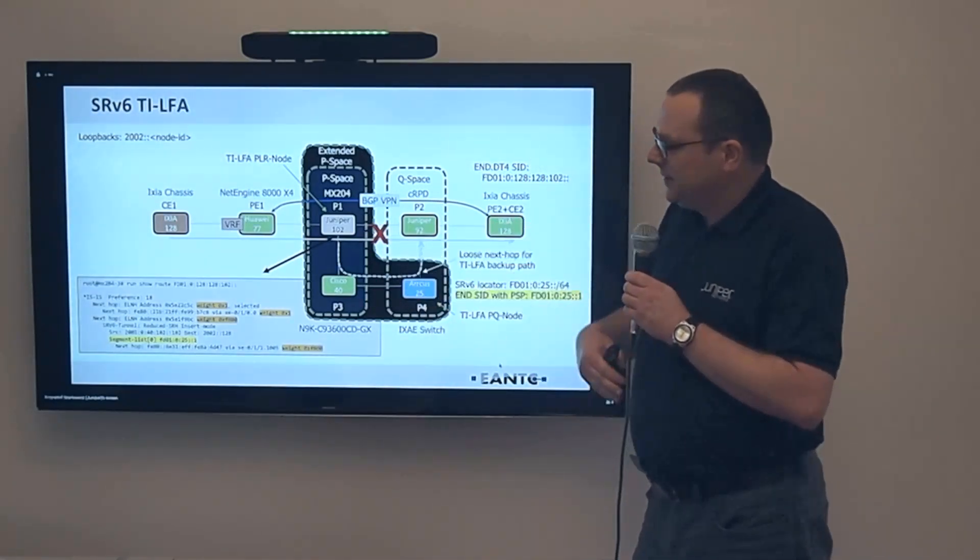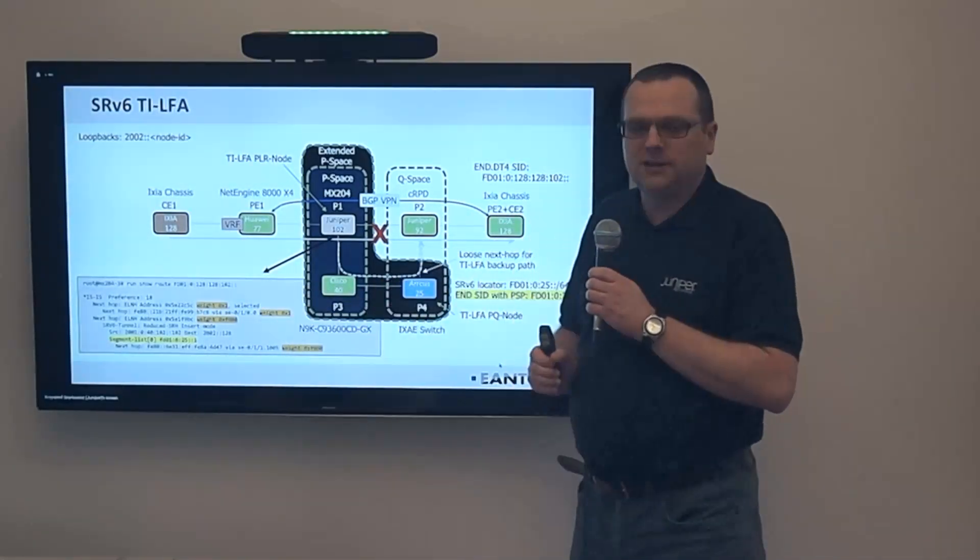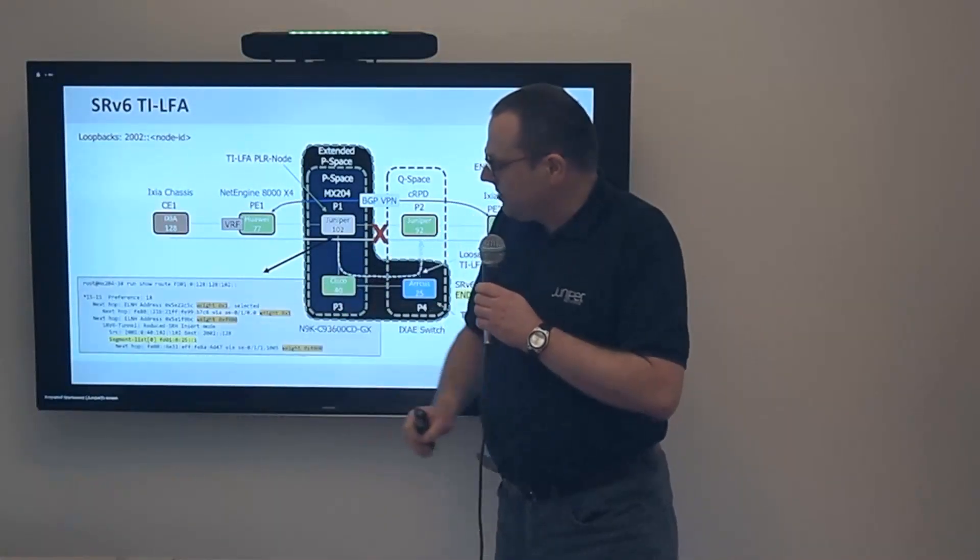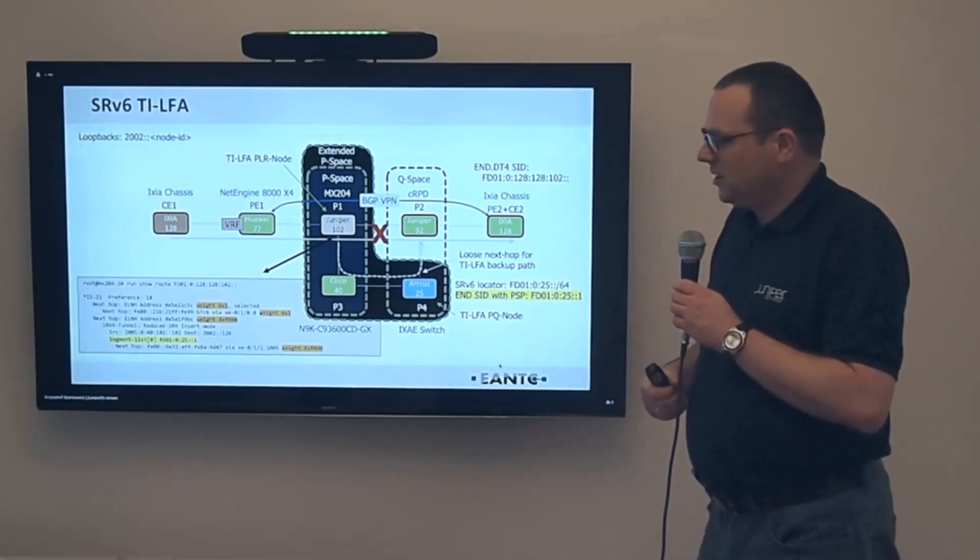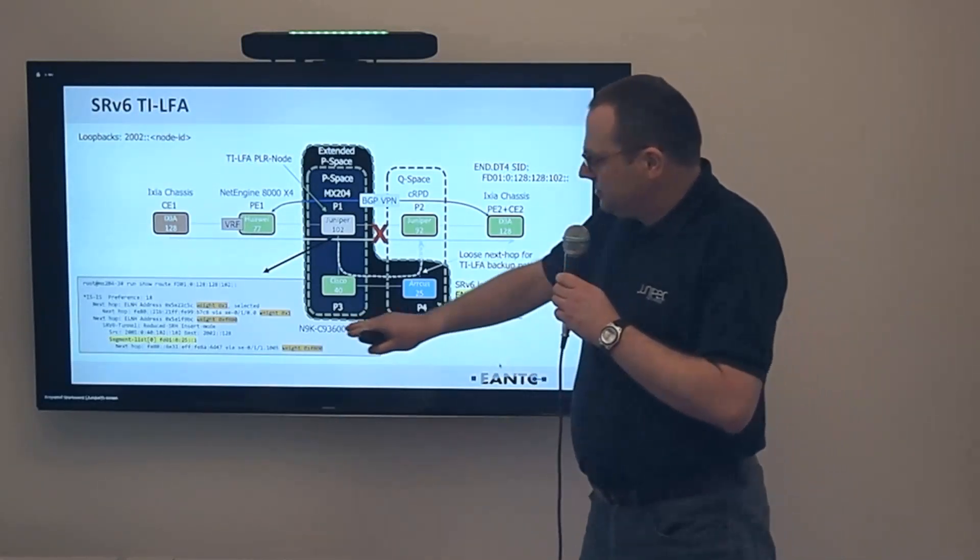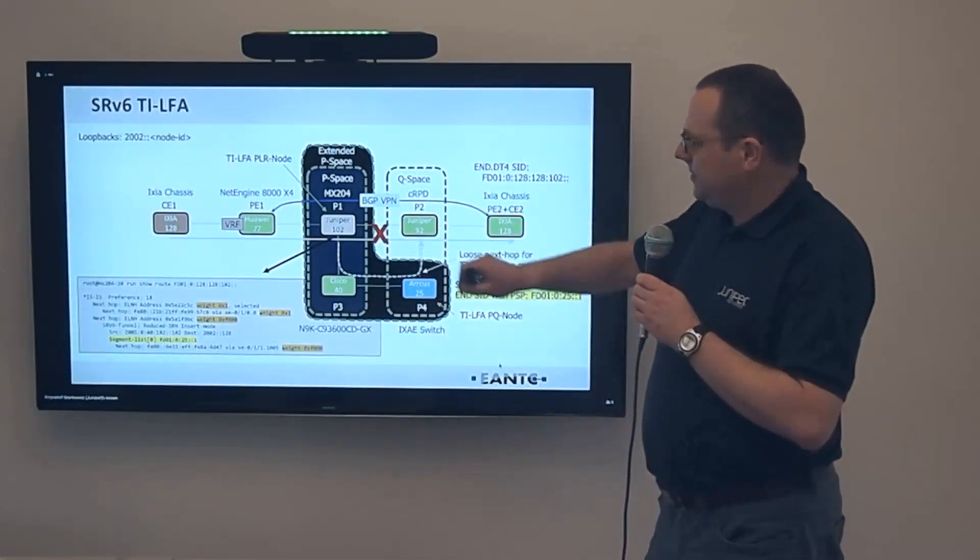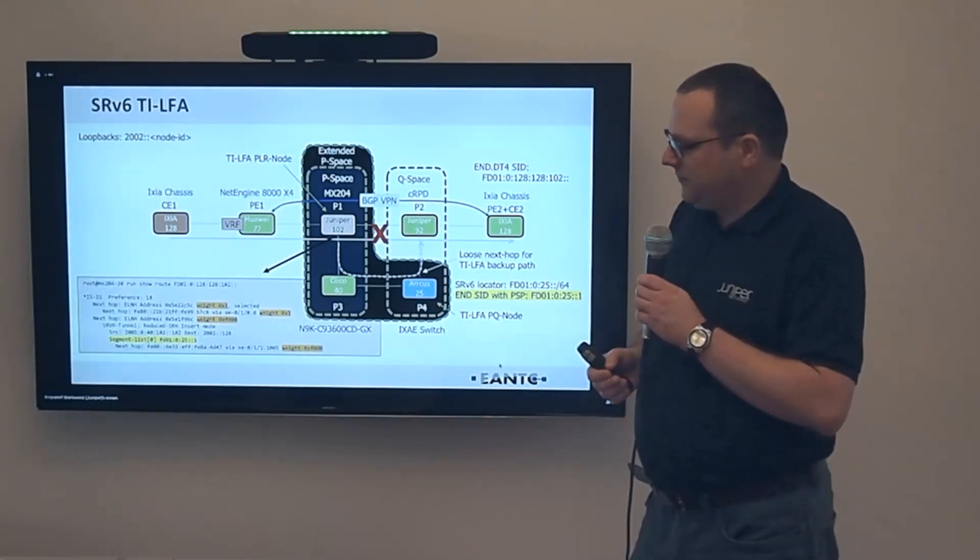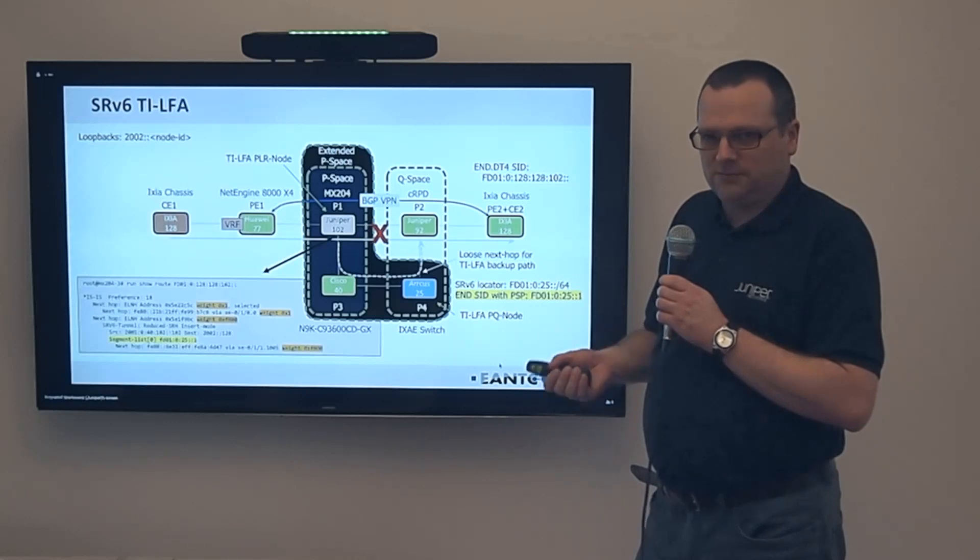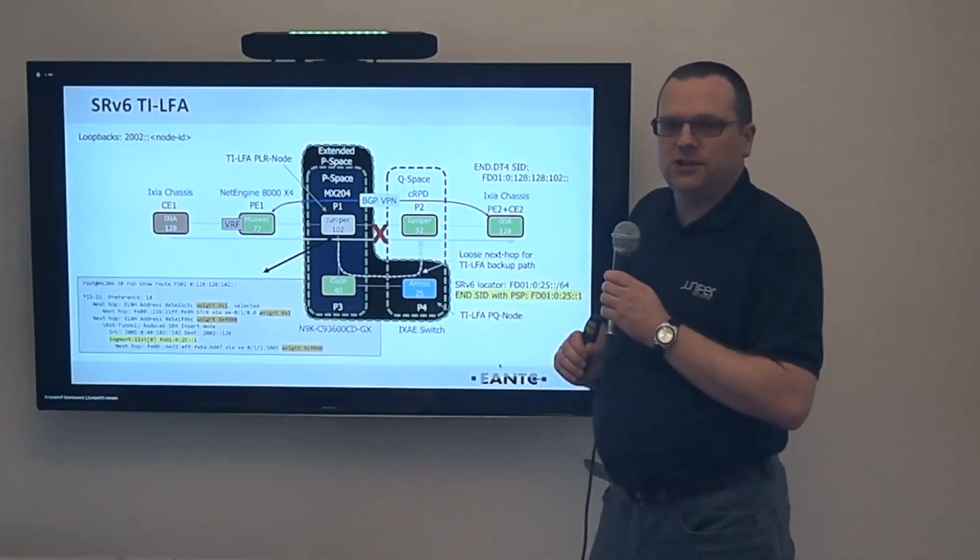As you see here on the slides, Juniper 102 is preparing for this event that the link goes down. It's preparing two next hops in the forwarding information base. You see one next hop with the weight 01 and another next hop with the weight 0F. In Juniper implementation, the next hop with the lower weight is the primary next hop, and the next hop with the higher weight is the backup next hop. As you see here, the primary next hop is directly linked to Juniper 92. This interface X010 is directly linked to Juniper 92. If this direct link goes down, this primary next hop is removed from the forwarding table without any global IGP convergence. It's simply based on the fact that the link goes down, and the secondary next hop, the 0F000000 next hop will be used.